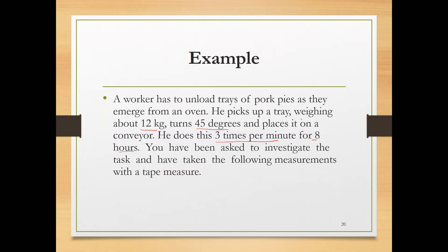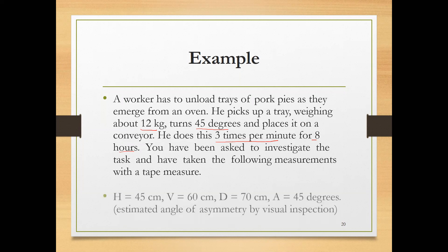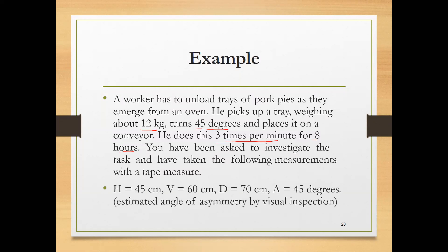You have been asked to investigate the task and have taken the following measurements with a tape measure. Horizontal distance is 45 cm, vertical distance is 60 cm, the height of lift is 70 cm, and angle of asymmetry is 45 degrees.